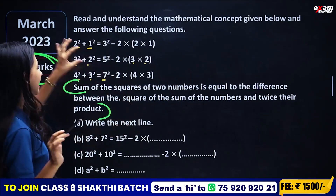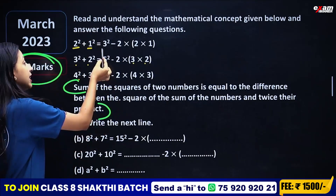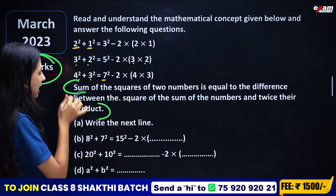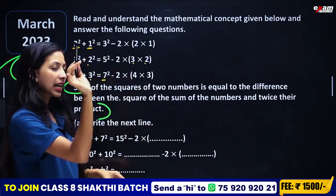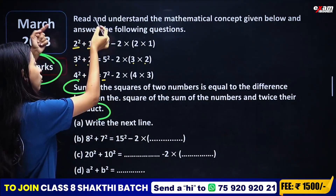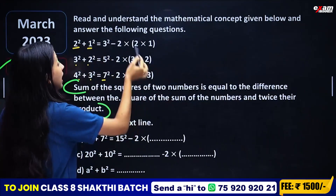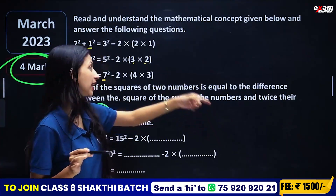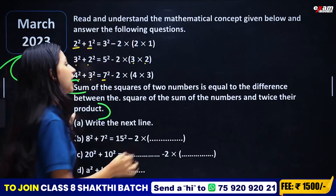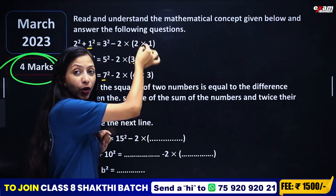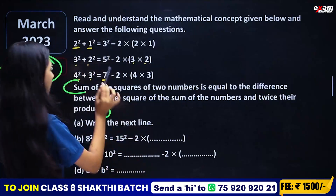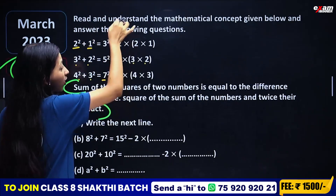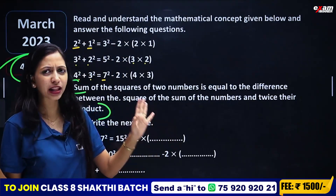We add 2 numbers and square the sum, then subtract twice the product of those numbers in the bracket. So what is this mathematical concept? The sum of the squares of 2 numbers is equal to the square of the sum of the numbers, minus twice their product.